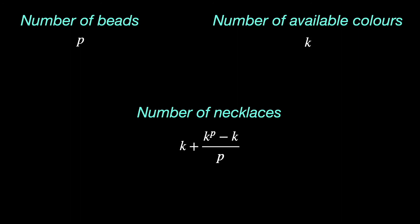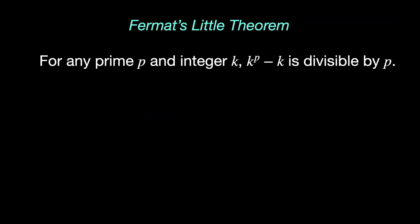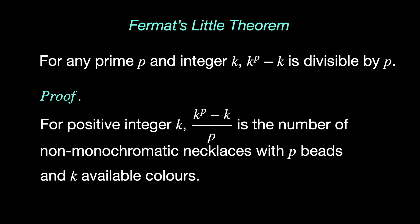One of the corollaries of the fact that this expression counts the number of necklaces is that it must be a whole number. That is, P must always divide K to the power of P minus K. It isn't obvious at all why this must be the case. And in fact, it is a remarkable result known as Fermat's Little Theorem. We have here found what is known as a combinatorial proof of the result, where we show that a given expression counts the number of a certain kind of things and thus must be a whole number.